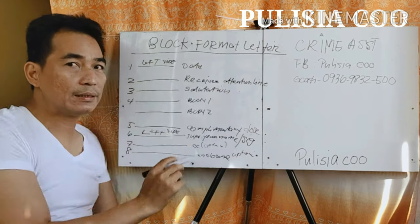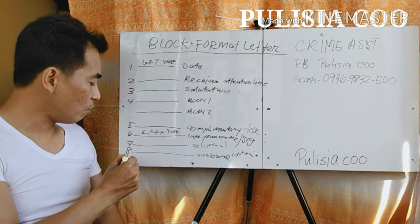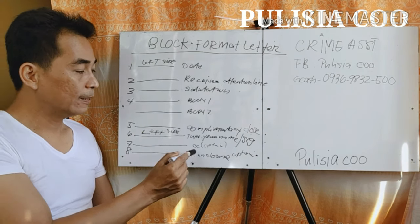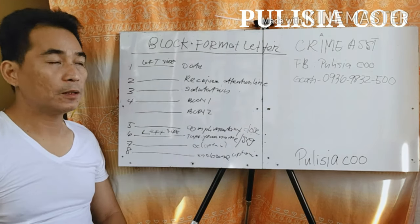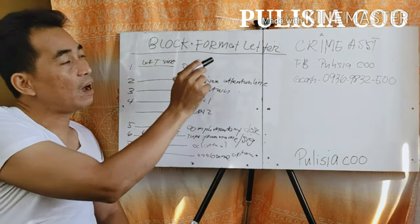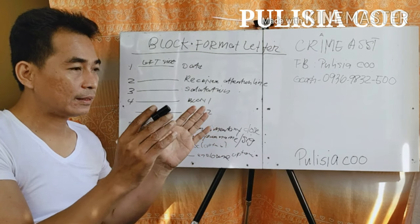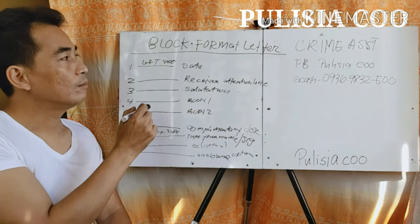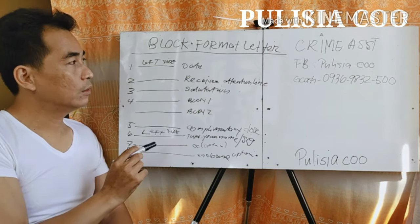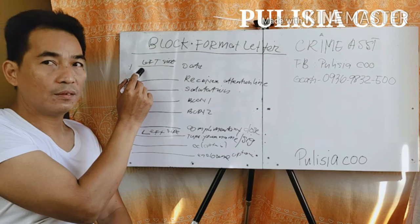So if you are doing a business letter, here are the ideas you need. This is the block format letter. This is a sample showing the parts of a business letter. The basic parts are 1 to 6, with additional parts 7 and 8 which are optional. Now, in the block format, all letters start from the left. The first part is the date, which always starts from the left.